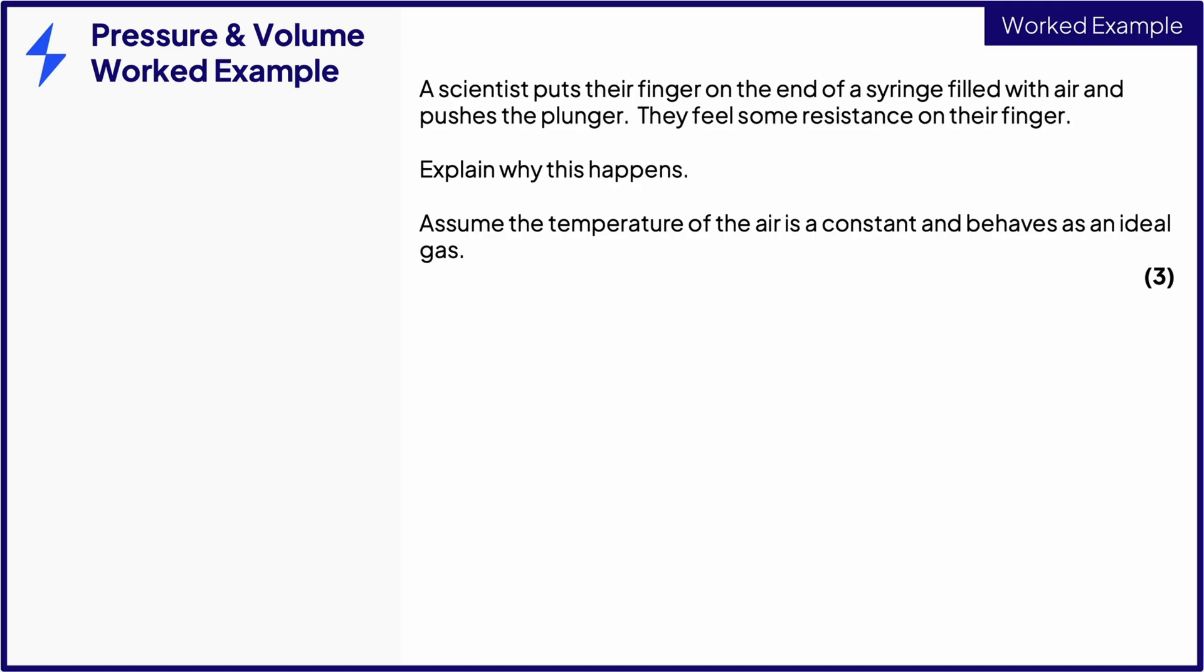Let's try an example with pressure and volume at constant temperature. A scientist puts their finger on the end of a syringe filled with air and pushes the plunger. They feel some resistance on their finger. Explain why this happens. Assume the temperature of the air is constant, and behaves as an ideal gas, for three marks.